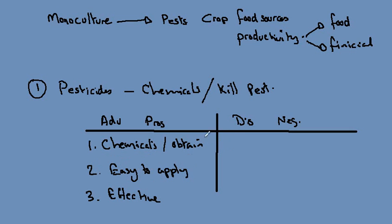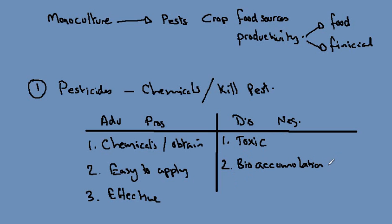The disadvantages: first, many of these chemicals are toxic — they will kill other plants and animals other than the pests, and may indeed be harmful to humans. Second, there is the concept of bioaccumulation, in which the pesticide builds up through the food chain, causing problems for animals at higher trophic levels. The famous example of this is DDT.